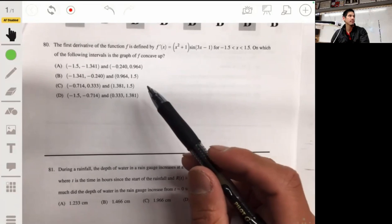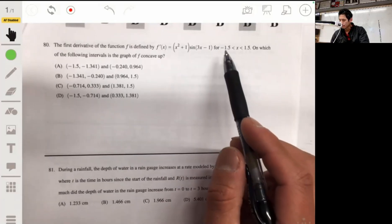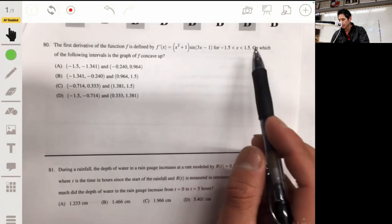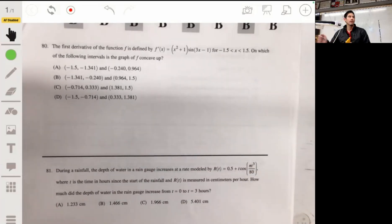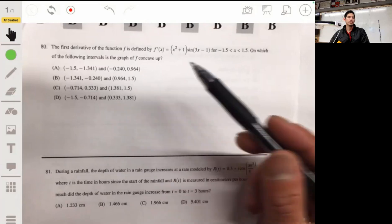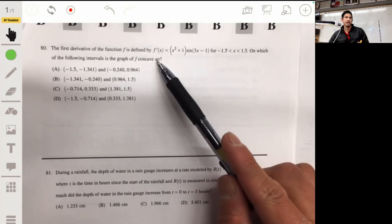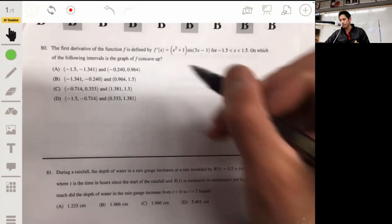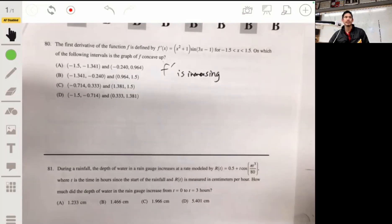For problem 80, we have the first derivative function f defined by f'(x) equals this for negative 1.5 to x between negative 1.5 and 1.5. On which of the following intervals is the graph of f concave up? We're given the derivative, so we can analyze the graph of the derivative and see where it's increasing, because it's going to be concave up when f' is increasing. Let's graph this with our graphing technology.